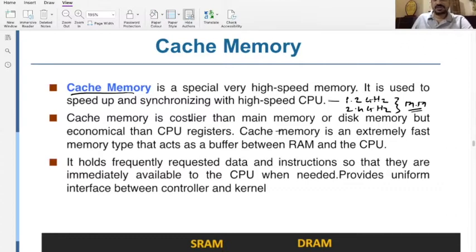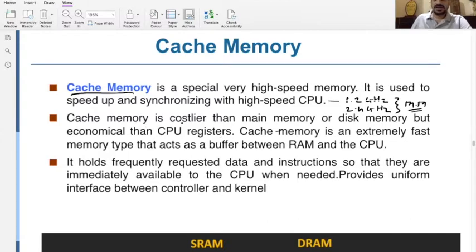This cache memory is costlier than the main memory — definitely it is costlier because the speed is very high — or disk memory, but it is economical compared to CPU registers. So cache memory sits in cost between main memory and CPU registers.